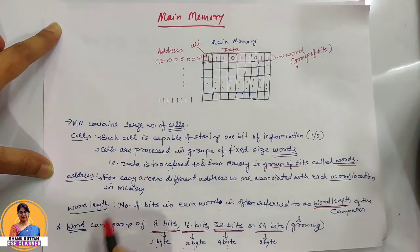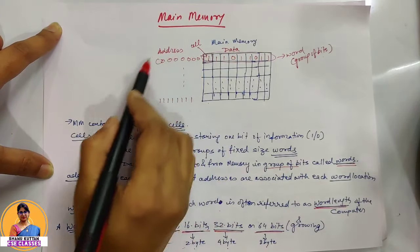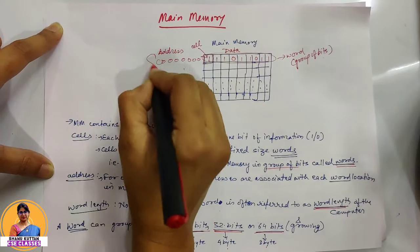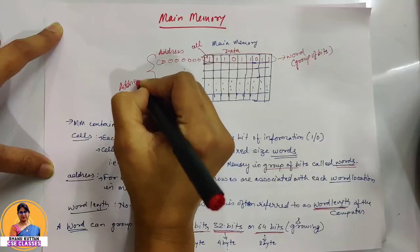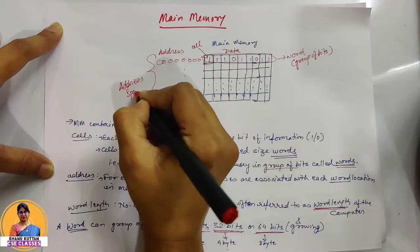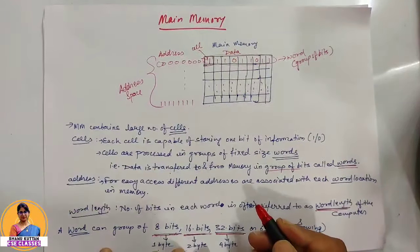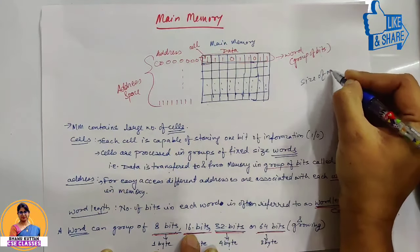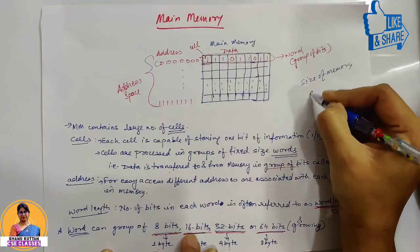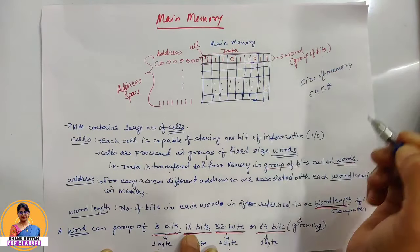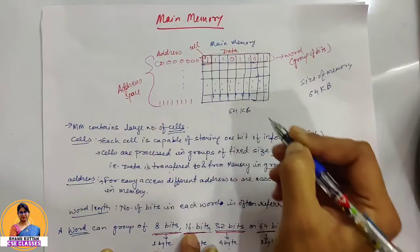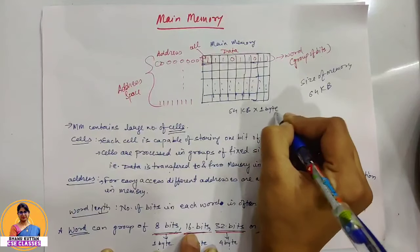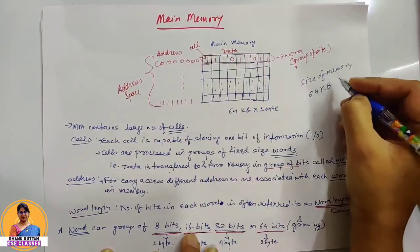Another term is address space. What is the address space? It is the number of uniquely identifiable locations in memory — the range of addresses. For example, suppose the size of memory is 64 KB, with a word size of 1 byte, which means 8 bits.